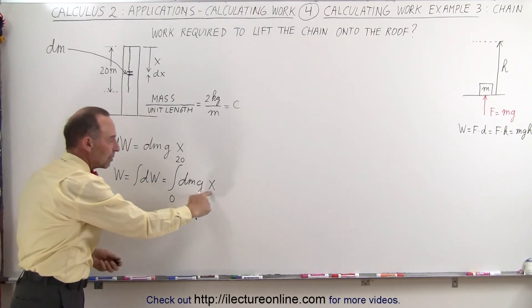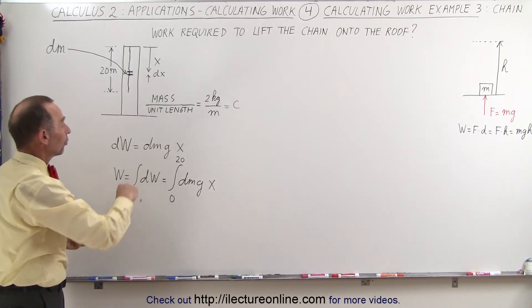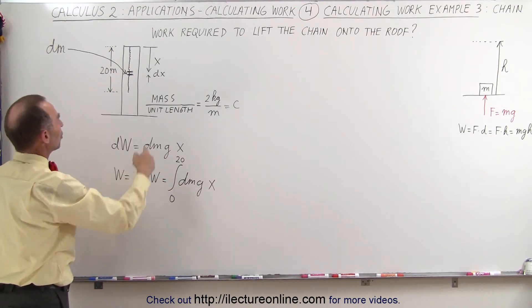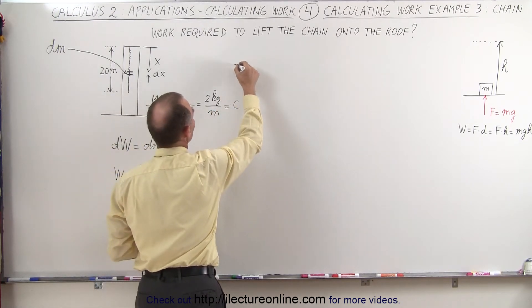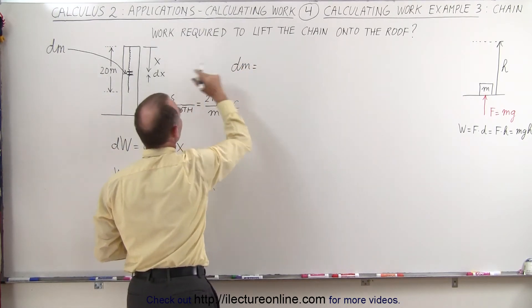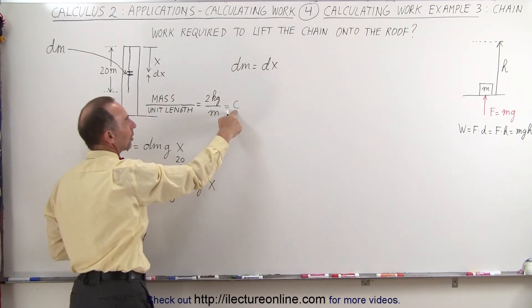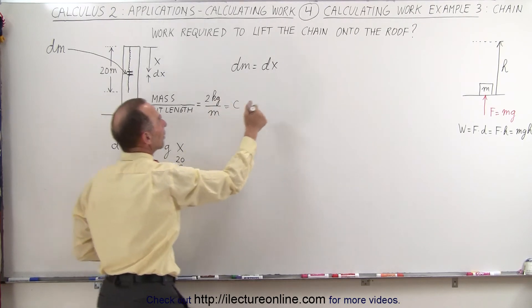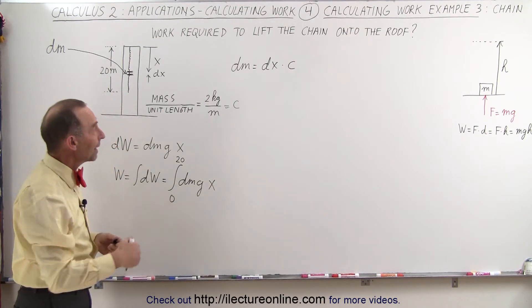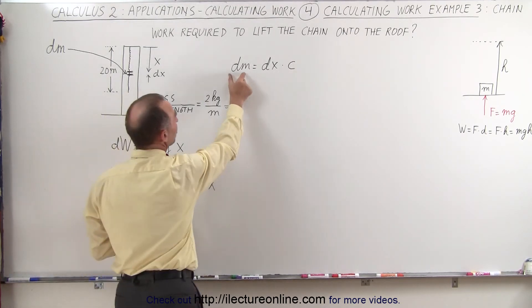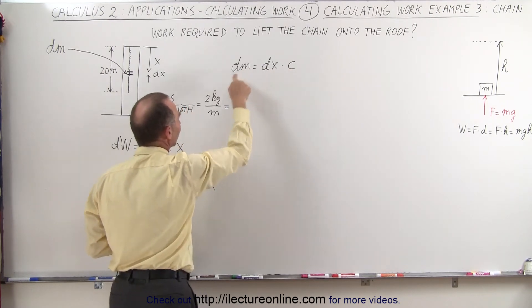Now our variable in here is x and our differential is dm, and of course they have to be the same variable, so somehow we have to convert dm into some units of dx. Alright, so the mass dm is equal to the smaller length dx times the mass per unit length, and for convenience we call that a constant c. C is 2 kilograms per meter, so we have to multiply by c. So we can actually replace dm by dx times c. Again, it's the mass per unit length c times the length gives us the mass of the small little segment.